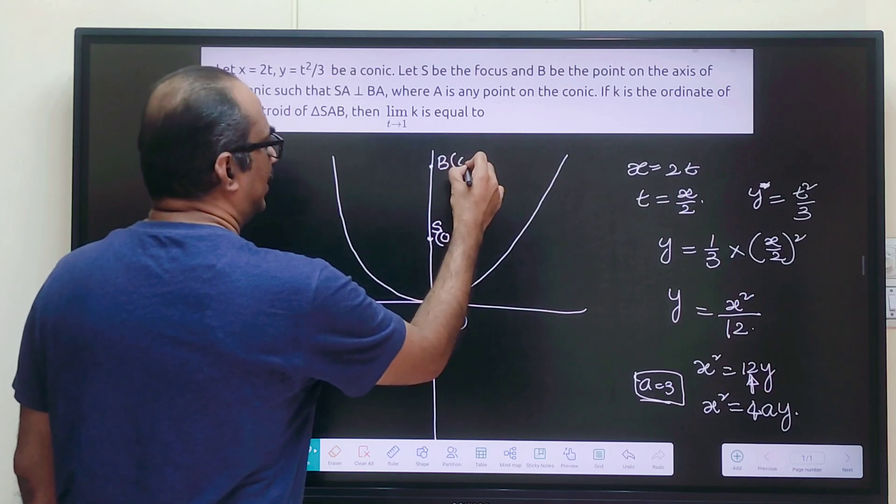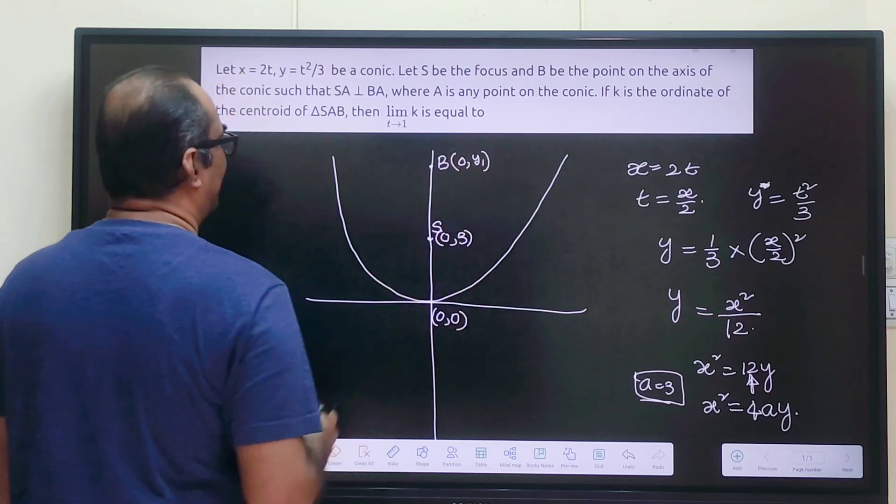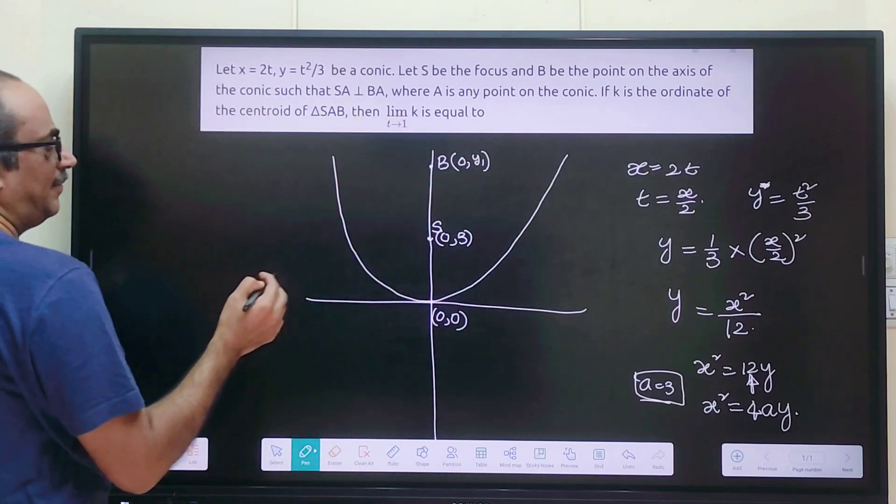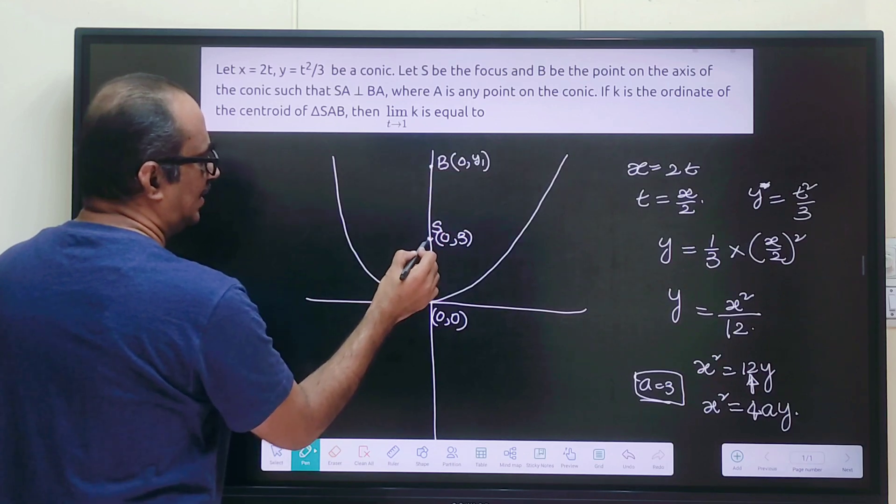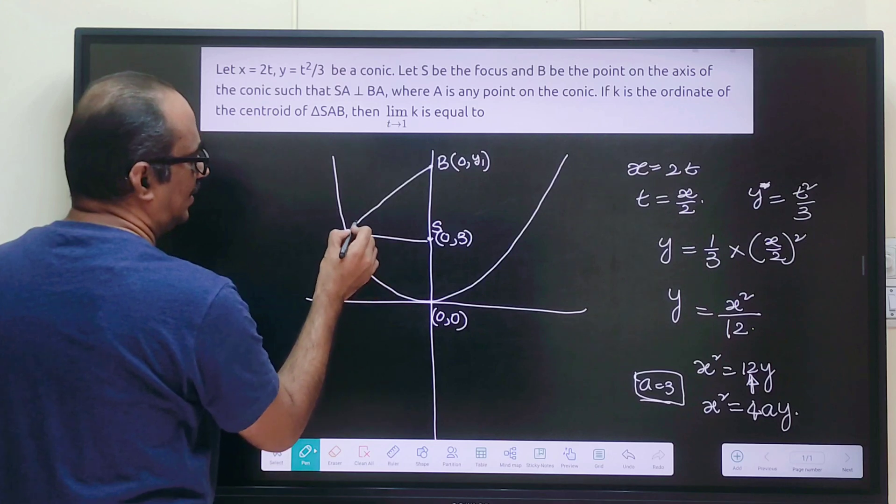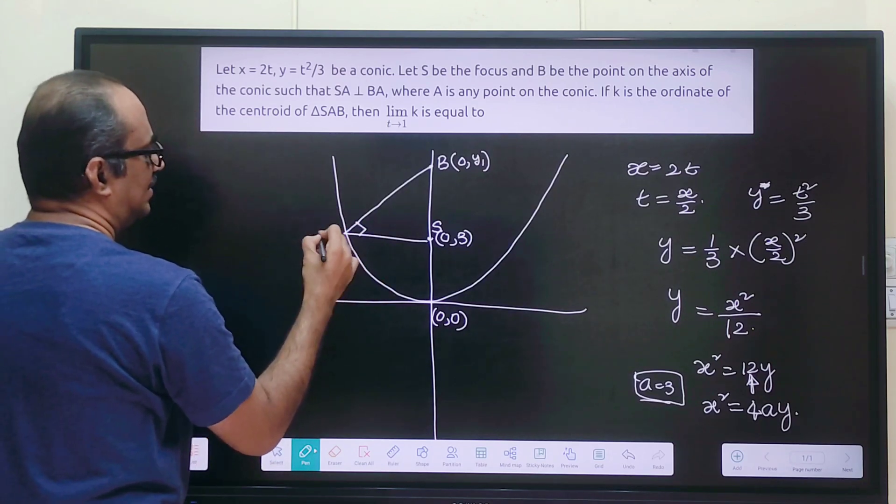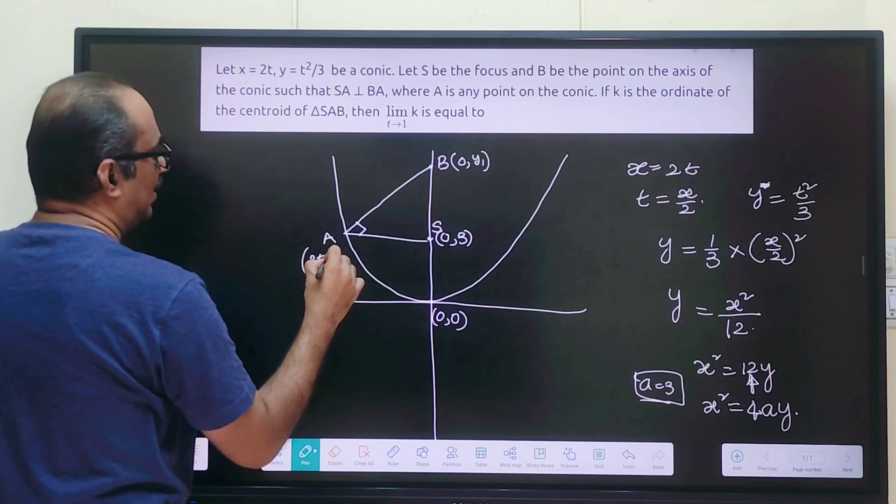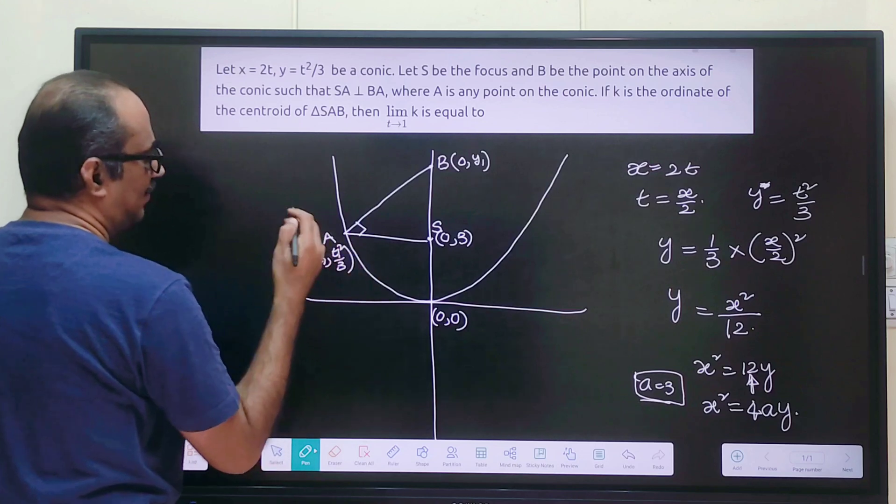B is (0, y₁) because it is on the y-axis, x coordinate is 0. Now we have SA perpendicular to BA. So A is a point such that SA is perpendicular to BA. So this angle is 90 degrees. Then this coordinate will be (2t₁, t₁²/3). That is what they have given us.